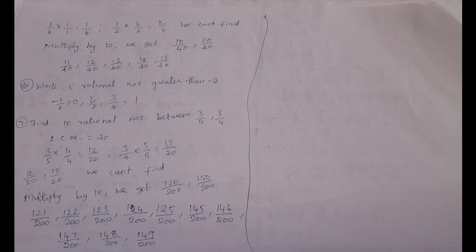This method is called the mean method — the two numbers are added and divided by two. Thank you.